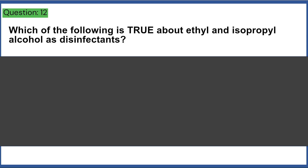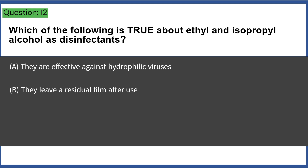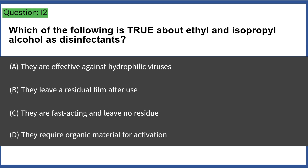Which of the following is true about ethyl and isopropyl alcohol as disinfectants? a) they are effective against hydrophilic viruses, b) they leave a residual film after use, c) they are fast acting and leave no residue, d) they require organic material for activation. Answer: C, they are fast acting and leave no residue.